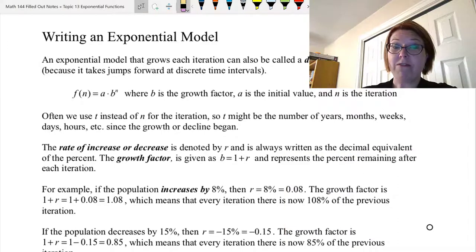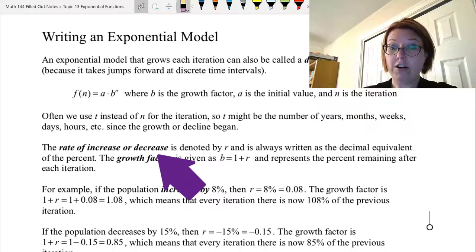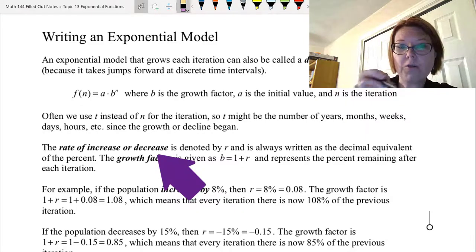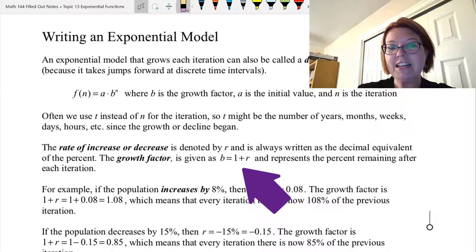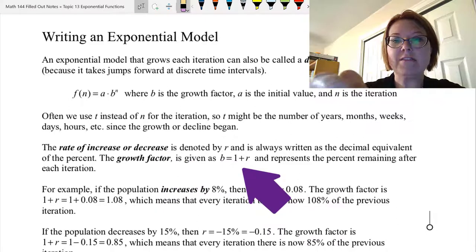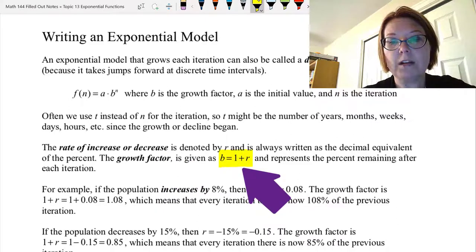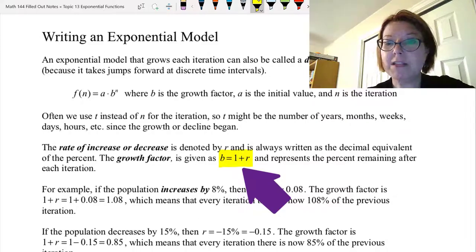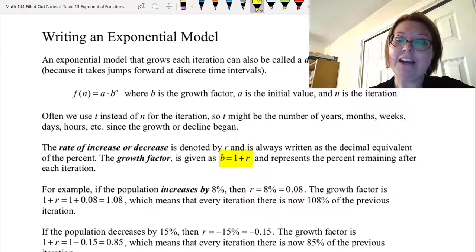Here's where we add some new stuff. The rate of increase or decrease is denoted by r, and it's always written as the decimal equivalent of the percent. The growth factor, which is what's actually in the exponential model, is given as b equals 1 plus r, and it represents the percent remaining after each iteration.